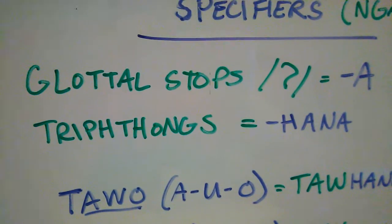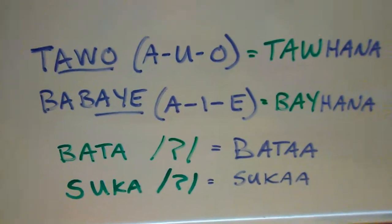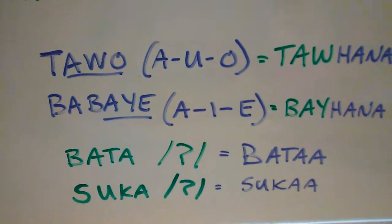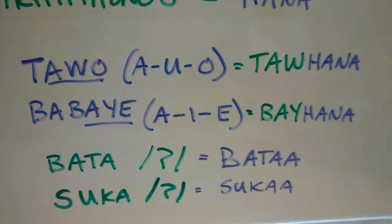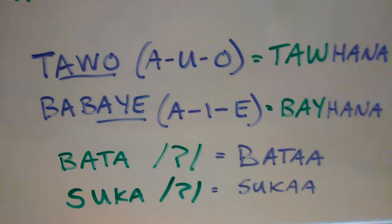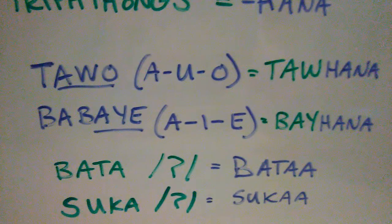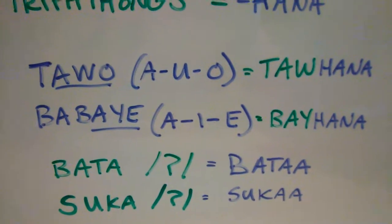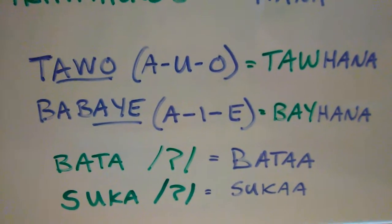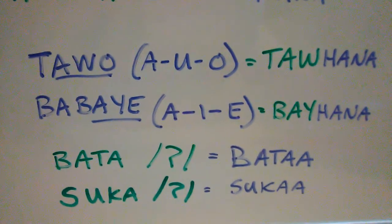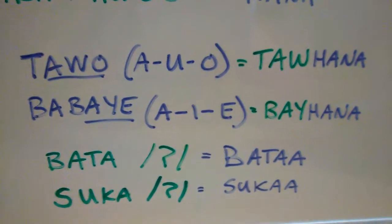For example, 'tau wo' is a triphthong — a, u, o. You hear that: a, u, and o. 'Tau wo', 'tau wo', and therefore we get the 'hana' ending: 'tau hana'. So 'kanang tau hana' means 'that kind of person' or 'which person are you talking about?' — it's a specifier specifying what kind of particular noun.